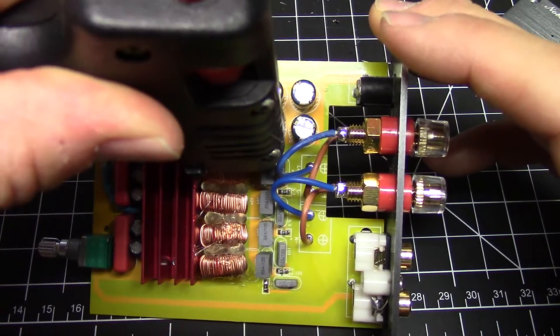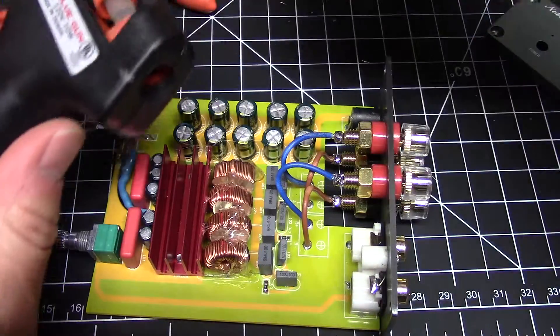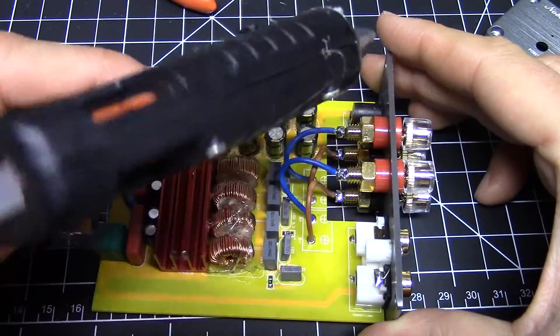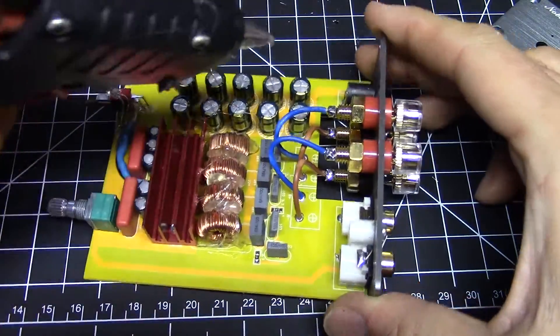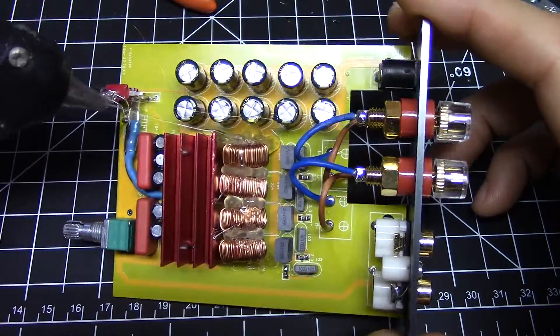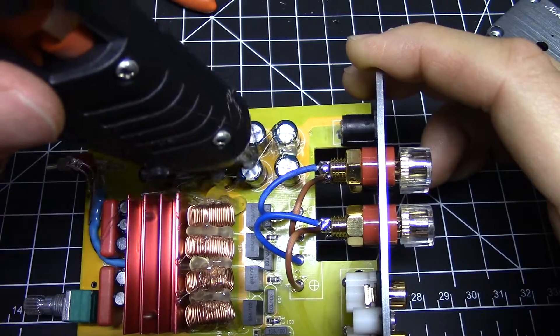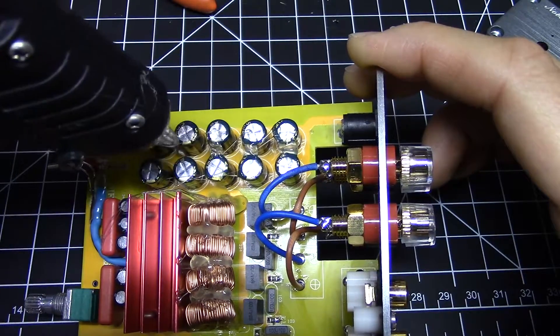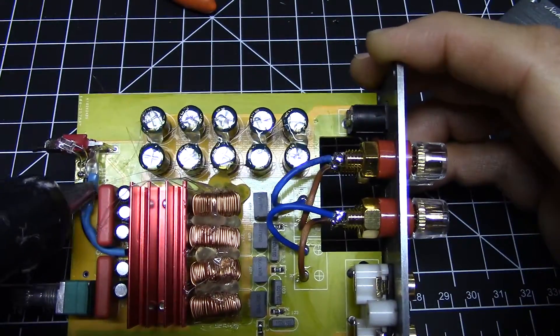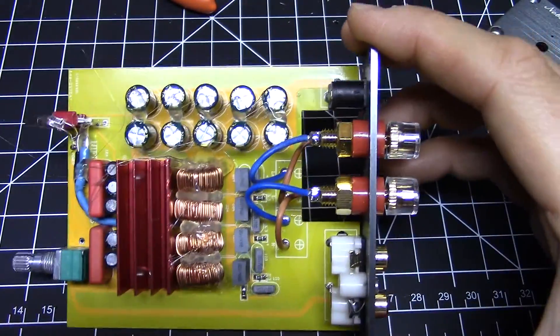I've had this glue gun for a long time. I think I paid like a dollar for it at the 99 cents store, but it works. While I'm at it, I might as well goop these capacitors to give a little extra strength. I'll goop down the little resistor as well. That's probably good enough.